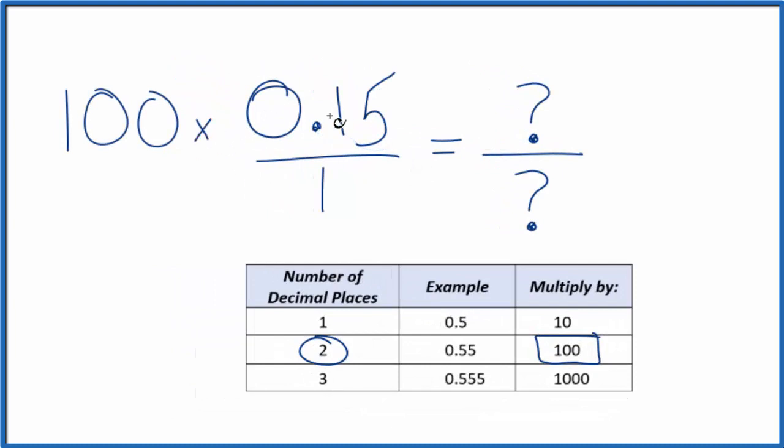So 100 times 0.15, that gives us 15. So there's our whole number. But 15, that does not equal 0.15. So what we've done to the top here, we need to do to the bottom as well. So let's multiply the bottom by 100. 100 times 1, that gives us 100.